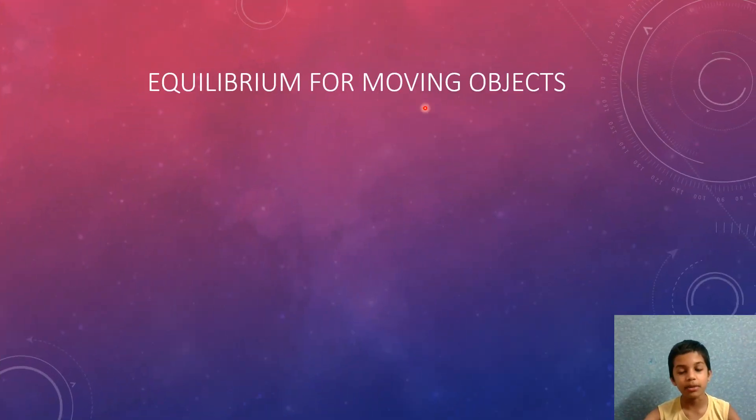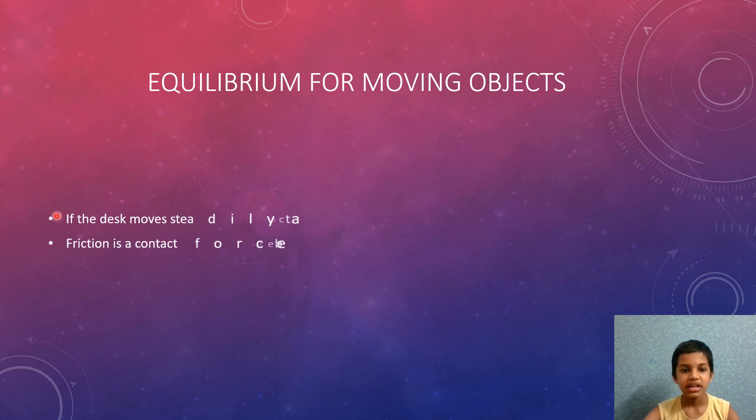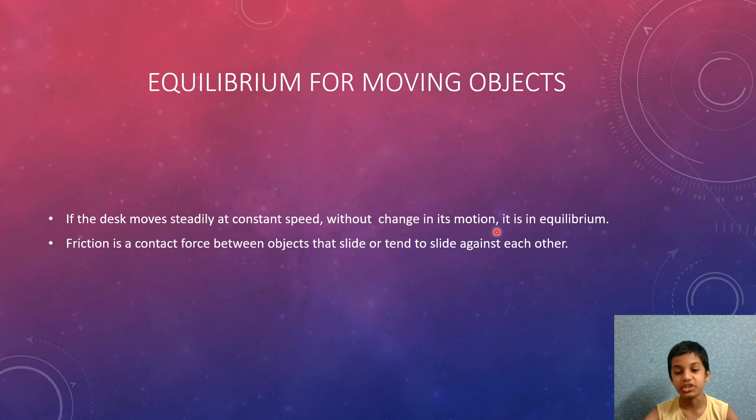If the desk moves steadily at constant speed without change in motion, it is in equilibrium. Friction is the contact force between objects that slide and tend to slide against each other.